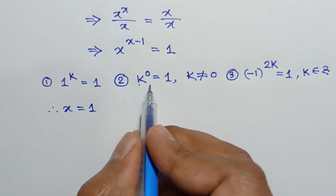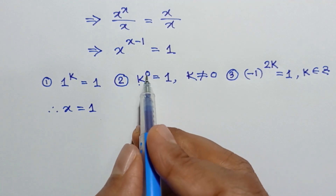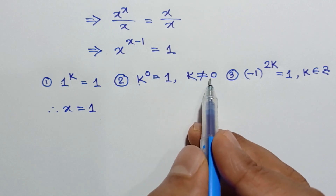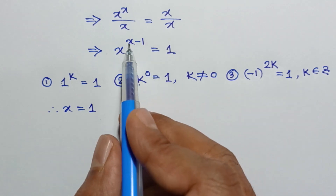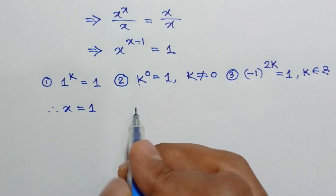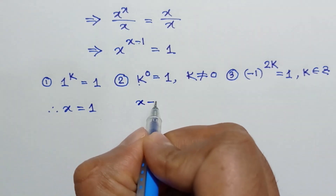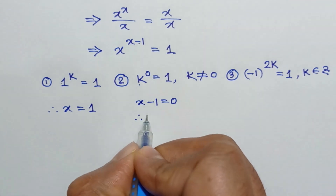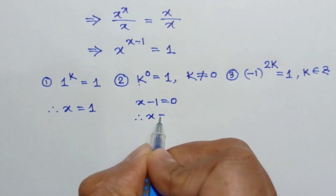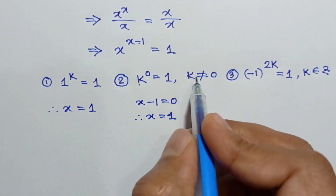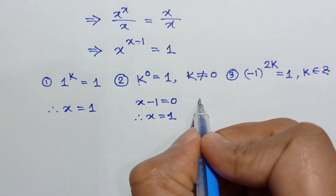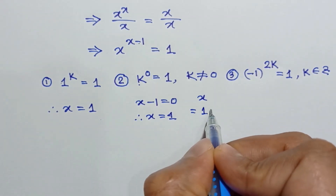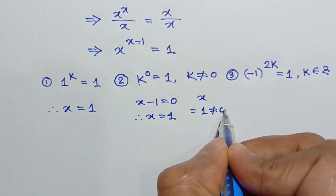For the second case, the power will be 0 and the base is not equal to 0. So x minus 1 is equal to 0, which gives x is equal to 1. And the base x equals 1, which is not equal to 0.